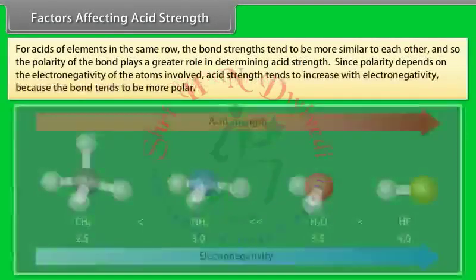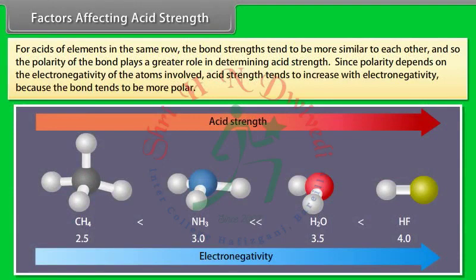For acids of elements in the same row, bond strengths are more similar, so polarity plays a greater role in determining acid strength. Since polarity depends on electronegativity, acid strength tends to increase with electronegativity because the bond tends to be more polar.